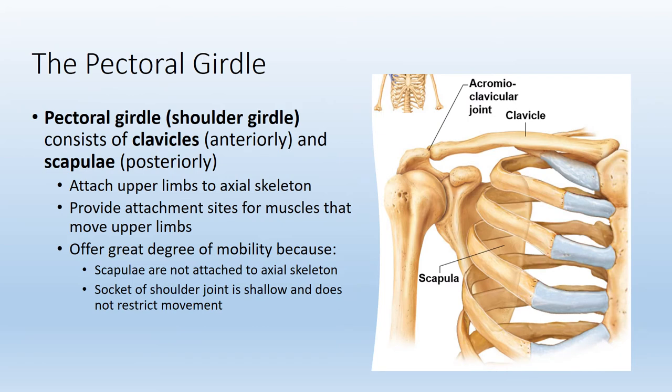We'll first get into the pectoral girdle and then talk about the upper limb. The pectoral girdle, also known as the shoulder girdle, attaches the upper limb to the axial skeleton. It includes the left and right clavicle, also known as the collarbone, and the left and right scapula, which is formerly known as the shoulder blade. These bones also provide attachment sites for many muscles that function to move the upper limb.